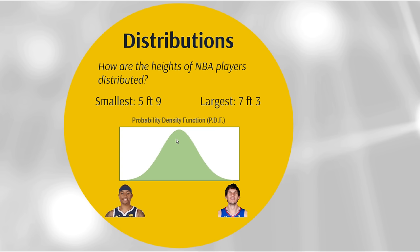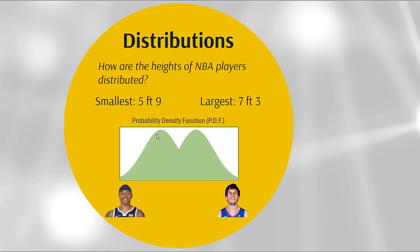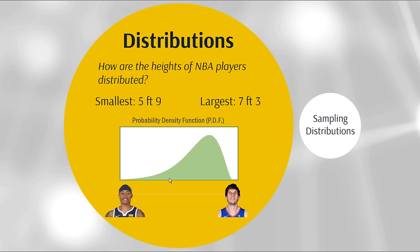This curve is a very common one in statistics — some people call it a bell curve, others call it a normal distribution. It basically means the bulk of the distribution happens towards the middle, and it gets rarer towards the extremes. There's symmetry about this distribution. Other possible distributions include a uniform distribution — equal probability at every height — a bimodal distribution with two peaks, or a skewed distribution. Left skew means the tail points in the left direction.